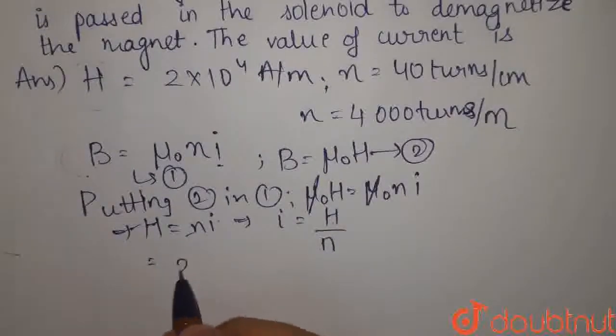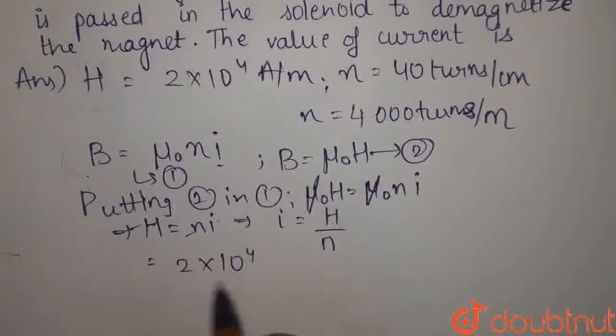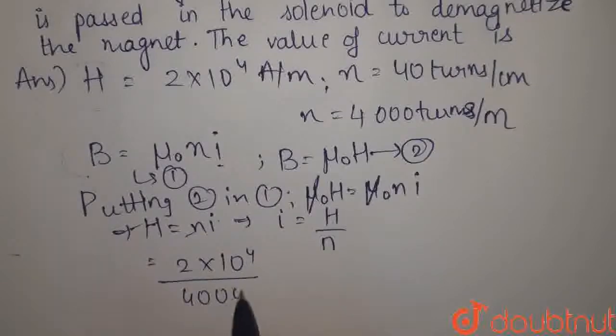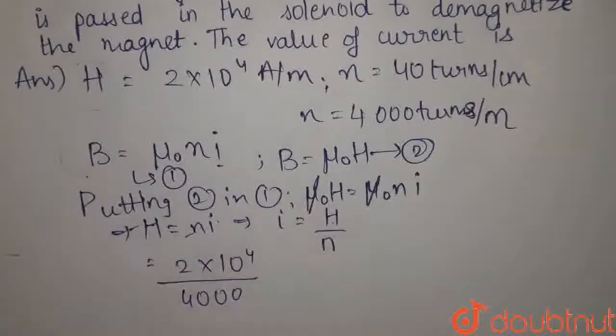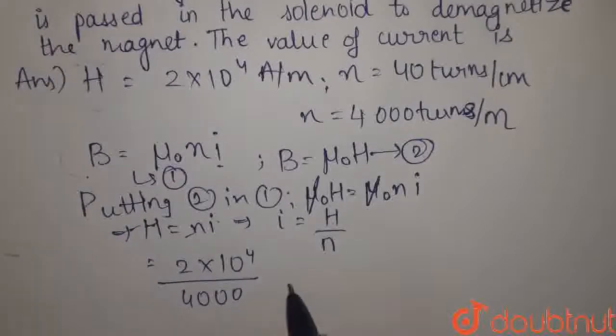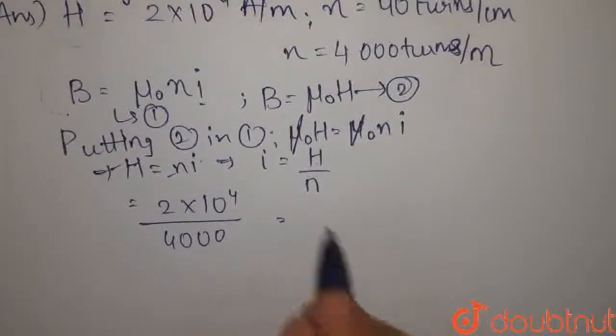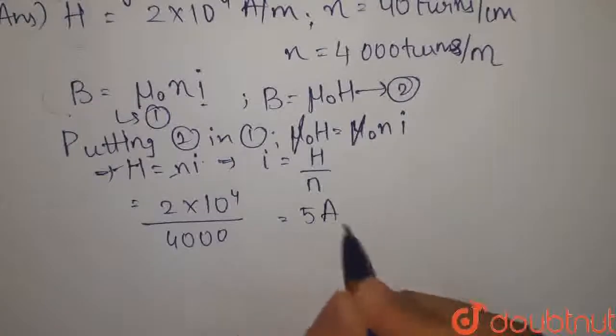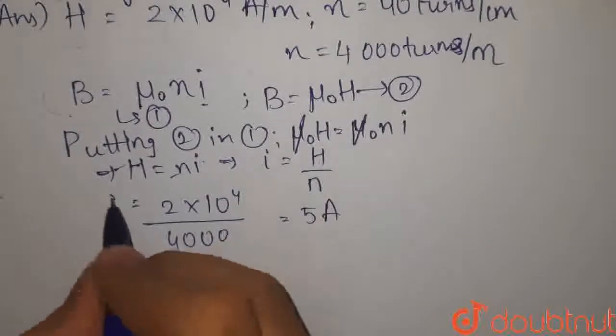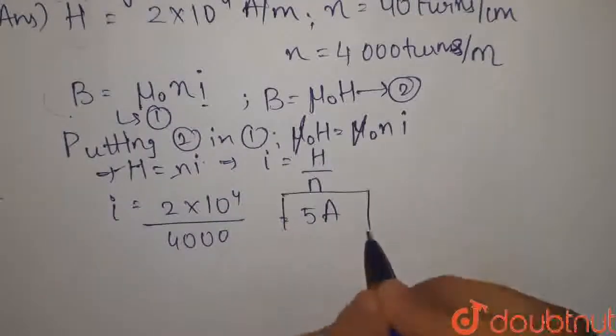H का value is 2 into 10 to the power 4, N is 4000. तो इसे calculate करेंगे, तो हमारा H का value क्या आजाएगा? Sorry, I का value क्या आजाएगा? 5 Ampere. I calculate कर रहे हैं. तो that is 5 Ampere.